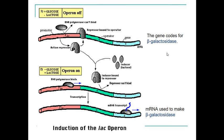Therefore, beta-galactosidase is not produced. If we have the inducer lactose, it binds to the repressor, which then cannot bind to the operator, which means that beta-galactosidase can be produced.